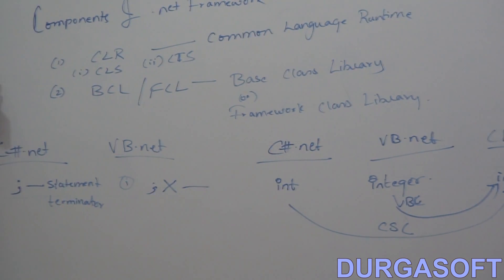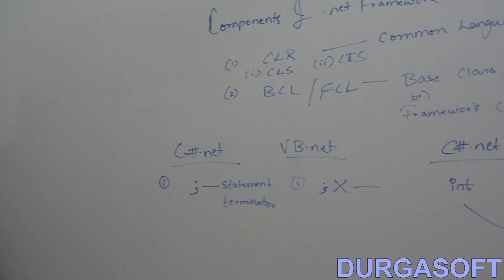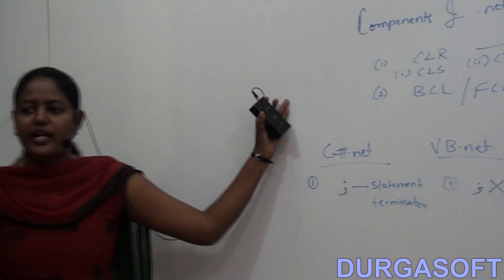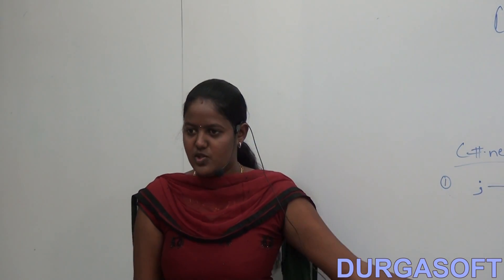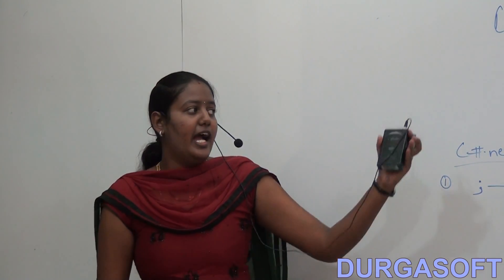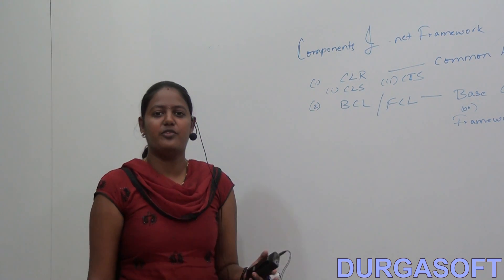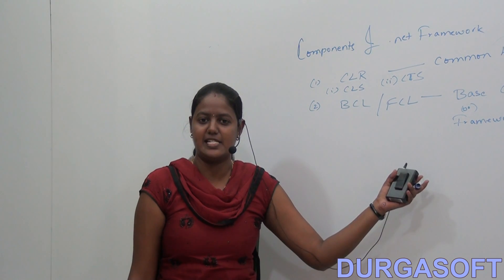So CLS and CTS together provide rules and regulations to the languages. CLS provides syntactical rules and regulations, and CTS provides data type rules and regulations. The second component of .NET Framework is BCL or FCL — Base Class Library or Framework Class Library.